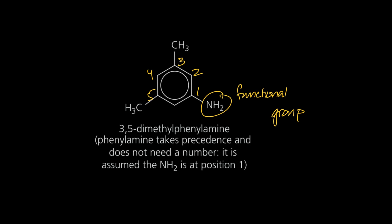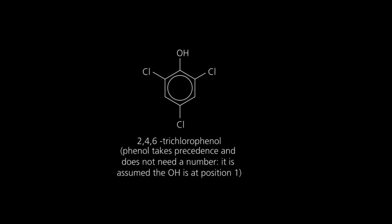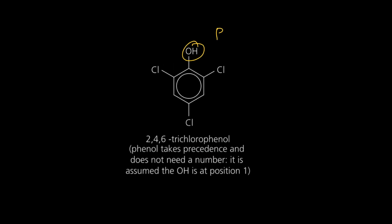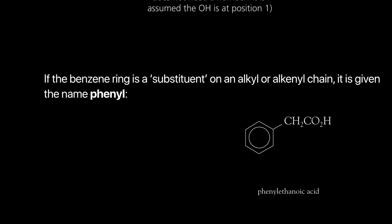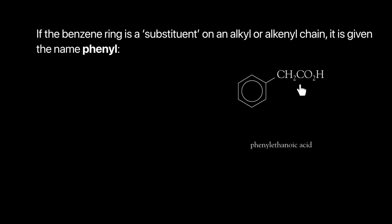When the functional group is a hydroxyl on the benzene ring, the compound is phenol and that carbon is number 1. With three chlorines at positions 2, 4, and 6, the compound is 2,4,6-trichlorophenol. On the other hand, if a functional group is not on the benzene ring but the benzene ring is a substituent on the main chain, the benzene ring is called 'phenyl'. For example, a carboxylic acid chain with a benzene ring substituent is called phenylethanoic acid.